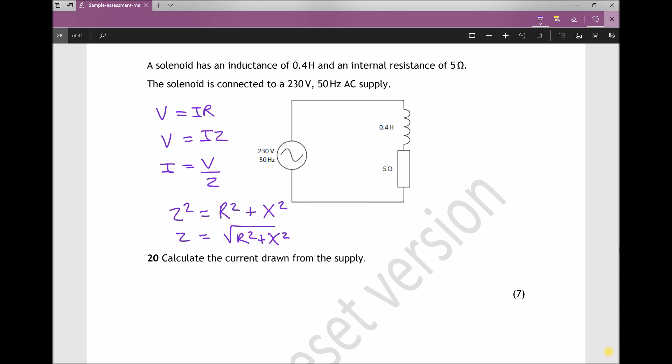So the first step then is to calculate X for our inductor, and the formula that we use for that is X equals 2 pi F times the inductance. Well, 2 pi is just a constant. F is the frequency of the supply, and we see here specified in the question that the frequency of the supply is 50 hertz. And L is the inductance of the inductor, which is also given as 0.4 Henry. Therefore, the reactance of the inductor is 125.66 ohms.